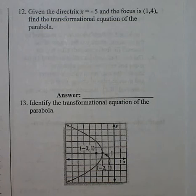Given a directrix of x equals negative 5 and a focus of 1, 4, find the transformational equation of the parabola.